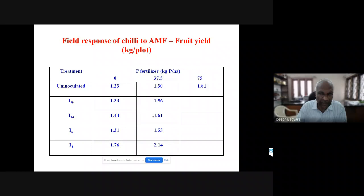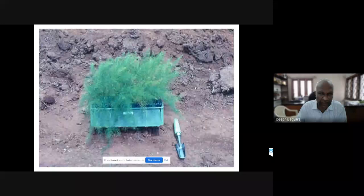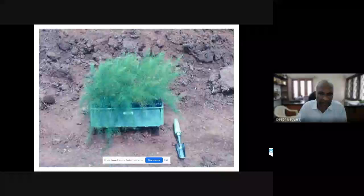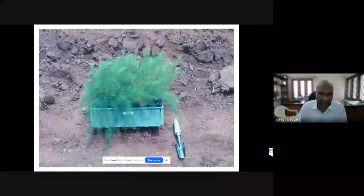In the case of chili, the recommended dose of phosphatic fertilizer is 75 kg P per hectare. We reduced it by 50%, and you can see that the yield of chili at 50% with mycorrhizal inoculation reached 2.14, comparable to the recommended full level. This clearly showed we can reduce phosphatic fertilizer by 50%. Another question is how simple it is to apply mycorrhizal fungi for the farming community.